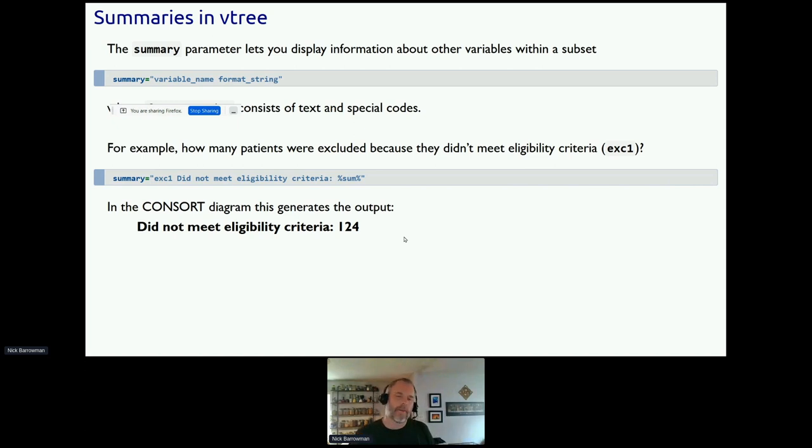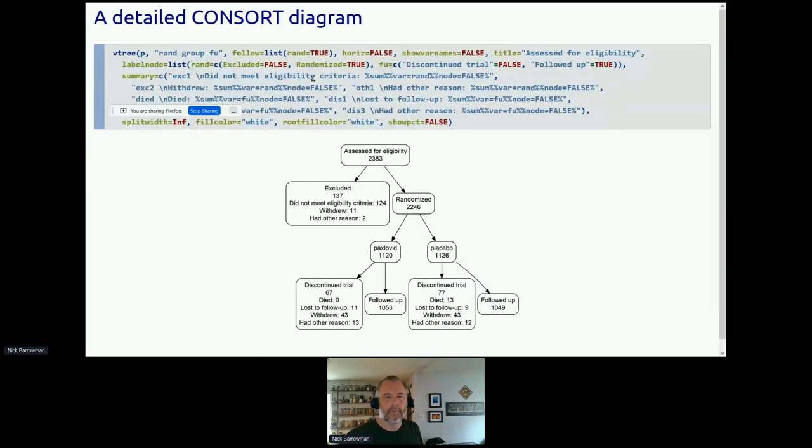When you do that for all the different eligibility and discontinuation criteria, it gets a little bit lengthy, as you can see here with the summary command. But then you can get a more detailed CONSORT diagram. I've done a few other things. I've turned off the colors and various other things. But basically, it's a fairly short command, despite all this stuff about the summaries. And it gives you all the information you need. You see the reasons for the exclusions and for the discontinuations. And of note, if you look in the Paxlovid group, there were no deaths out of 1,120 patients randomized to the Paxlovid treatment. In the placebo group, there were 13 deaths out of 1,126. So it's pretty striking. So that's roughly how you can produce a CONSORT diagram in vtree. It doesn't have that kind of rectangular look of the classic CONSORT diagram, but it's fully reproducible. And it can be used as you update data from your trial or you correct errors and so forth. And again, it is reproducible.